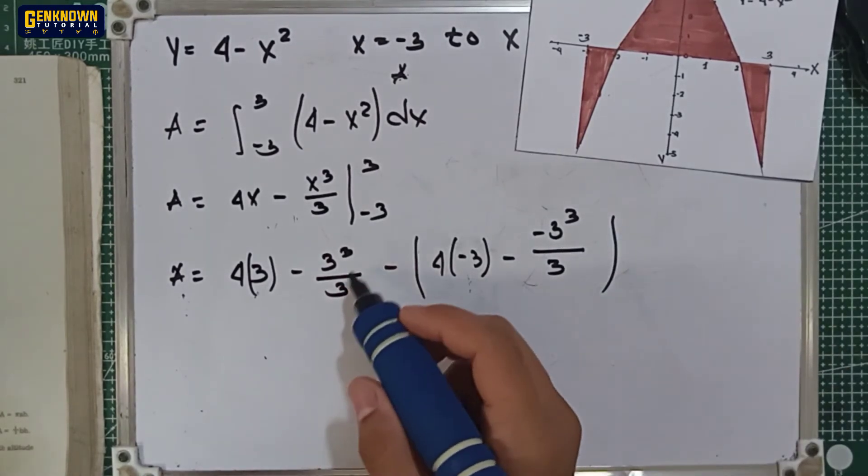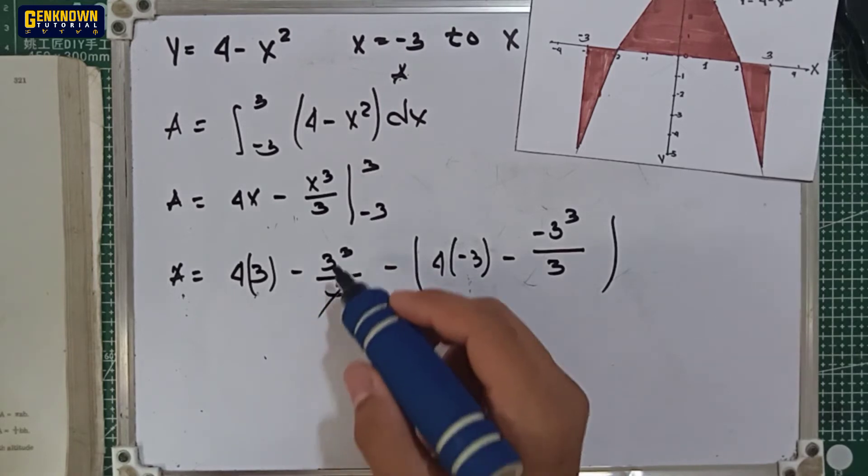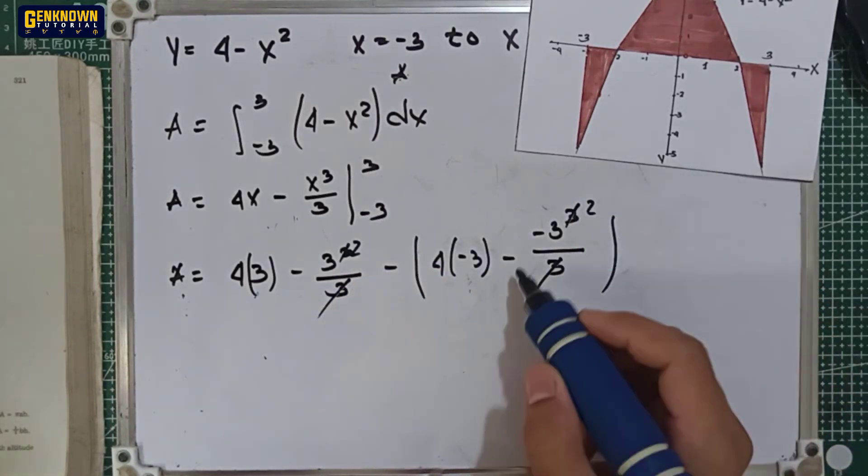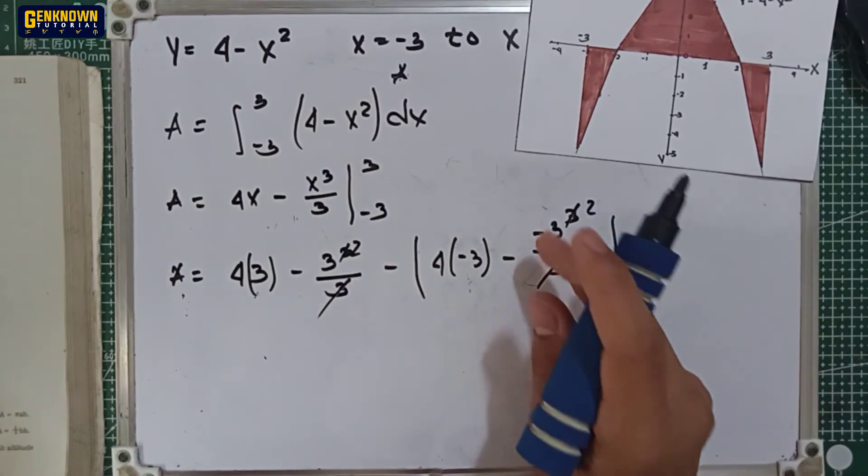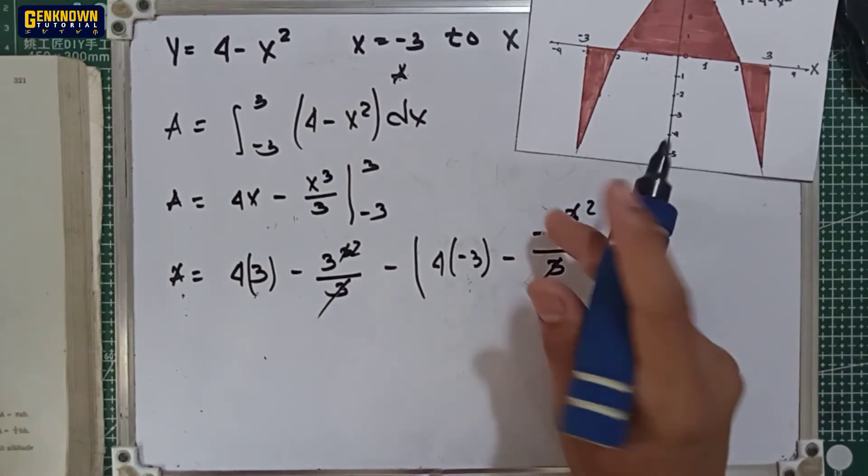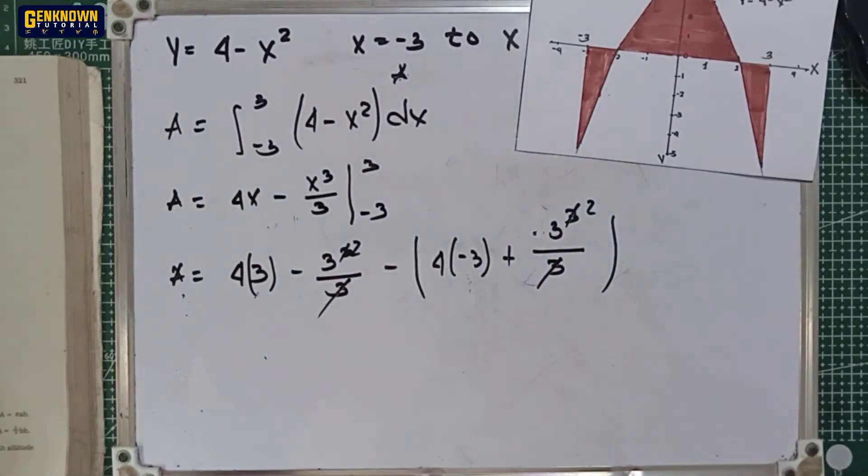We can cancel out the 1, 3, isang 3 dito sa denominator natin, magiging 2 yan, and also in this part. But positive multiplied by positive, I mean negative multiplied by negative is positive.